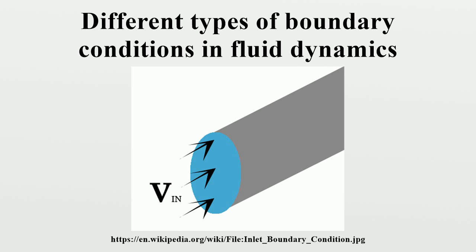The wall boundary is commonly known as the no-slip boundary condition and is the appropriate condition for velocity components at the wall. The normal component is set to zero, while the tangential component is set to the velocity of the wall. Heat transfer through the wall can be specified, or if the walls are considered adiabatic, then heat transfer across the wall is set to zero.